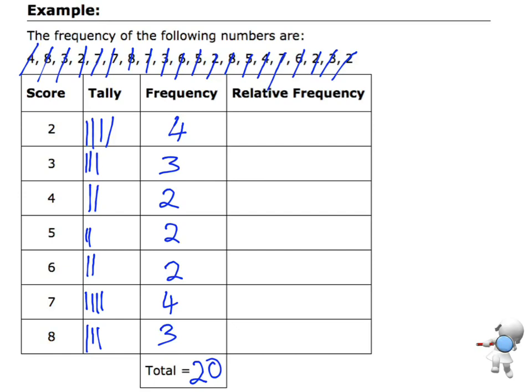Now I've got my frequency and my tallies, and I need to find the relative frequency. I know that there were 20 of these data values in total. The score of 2 occurred 4 times, a frequency of 4, so the relative frequency is 4 over 20. I can leave that as a fraction, or many students prefer to turn that into a decimal, so that would be 0.2.